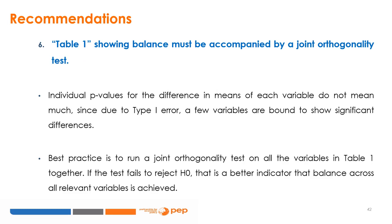Table 1 showing balance must be accompanied by a joint orthogonality test. Although individual p-values for the difference in means of each variable are generally reported in practice, they do not mean much on their own — due to type 1 errors, a few variables are always likely to show significant differences. Best practice is to run a joint orthogonality test on all variables in Table 1 together. If the test fails to reject the null hypothesis, you have a better indicator that balance across all relevant variables has been achieved.